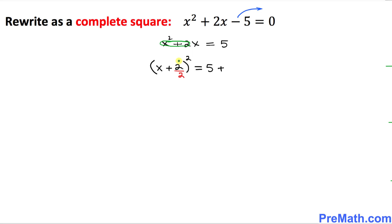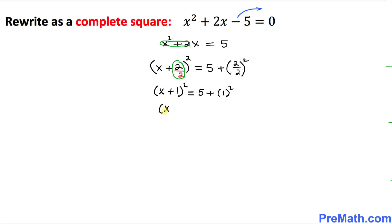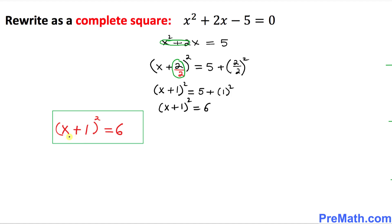Whatever number we put down — this 2 over 2 — I am going to write down this same number, 2 over 2, and then square. This is the only trick that we will be using. On the left-hand side we got simply x plus 2 over 2, which is 1, squared, equal to 5 plus 1 squared. Simplifying the right-hand side, we get x plus 1 squared equal to 5 plus 1, which gives us 6. So our complete answer turns out to be x plus 1 squared equal to 6.